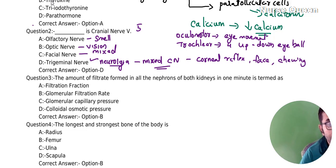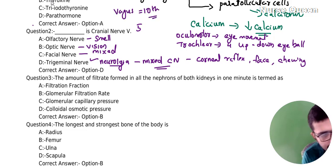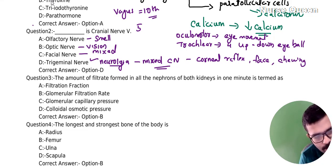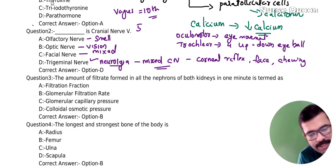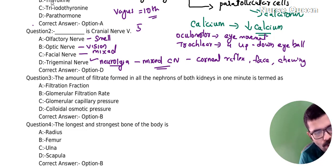Vagus (10th cranial nerve) — mixed nerve. Functions include pain control and vitals control.